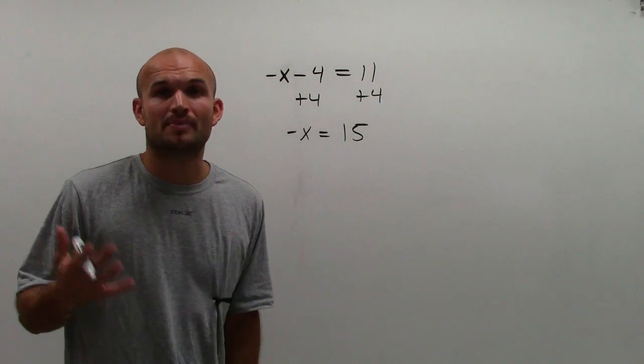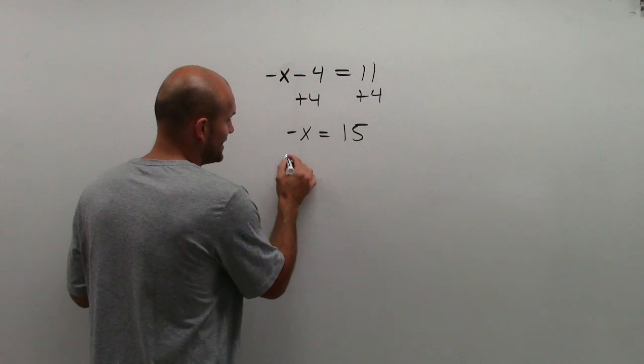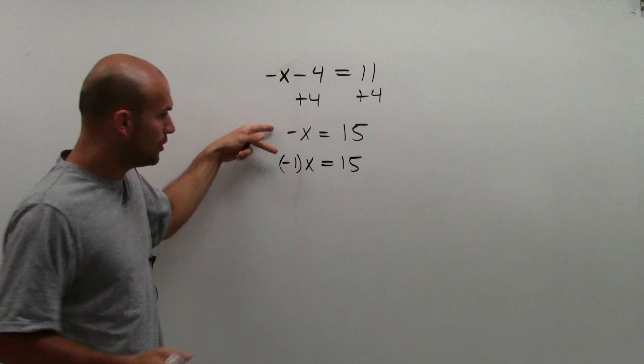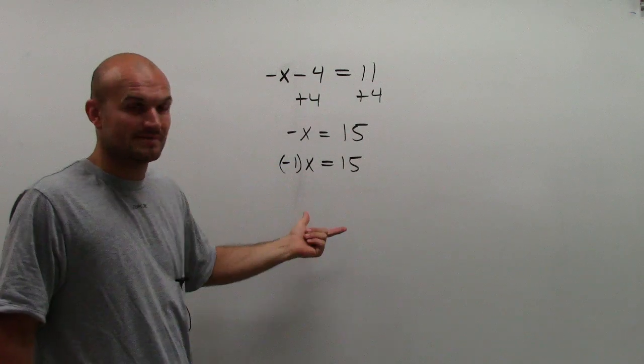Remember, by the multiplication property of negative 1, that negative sign is really saying negative 1 times x equals 15. Those are equivalent.